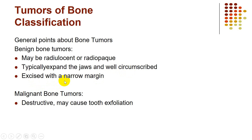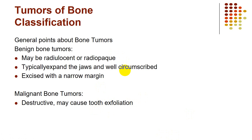Malignant tumors, on the other hand, are destructive, poorly demarcated, and not well circumscribed. They can cause tooth exfoliation. If a tumor is causing root resorption, loss of teeth, and destruction of surrounding tissue, consider malignant or locally aggressive tumors. If the tumor is well circumscribed and displacing teeth, it means it is slowly growing and we go more toward a benign process.